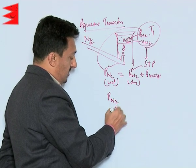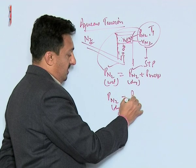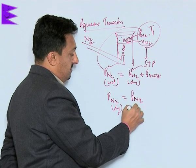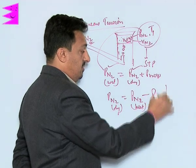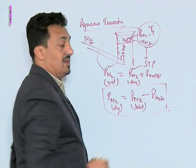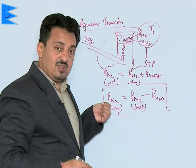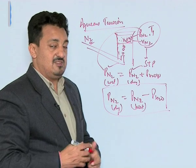What you need to do is subtract the aqueous tension from the pressure of the wet gas, so that you get the exact pressure of the gas, and then you change it into STP conditions.